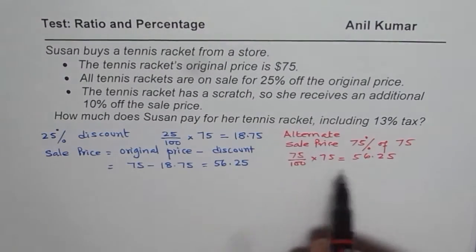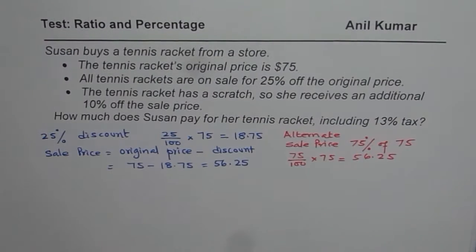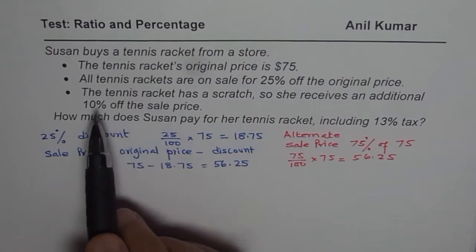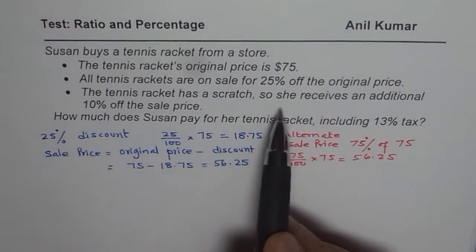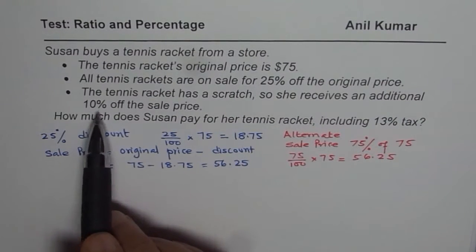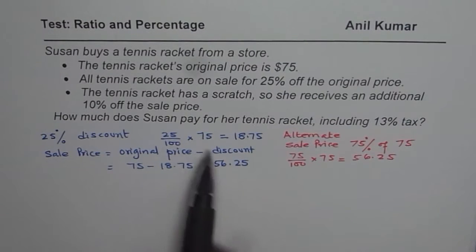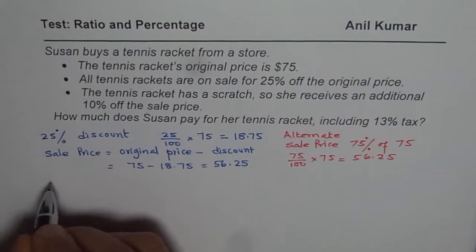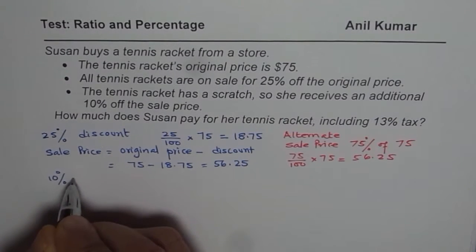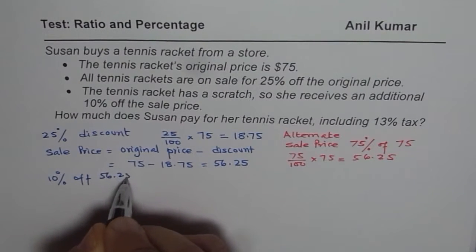The advantage of this alternate method is that you do not have to find the discount and then take the difference. Now let us continue further. The tennis racket has a scratch, so she receives an additional 10% off. This 10% is not on the original price — it is on the sale price of $56.25. So we do 10% of the sale price of $56.25.